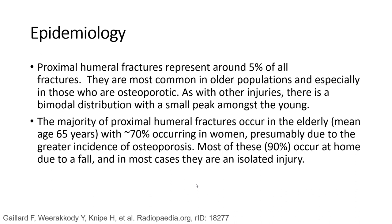As with other injuries, there is a bimodal distribution with a small peak among the young. The majority of proximal humerus fractures occur in the elderly, with a mean age around 65 years, with around 70% occurring in women, presumably due to the greater incidence of osteoporosis. Most of these — 90% — occur at home due to a fall, and in most cases they are an isolated injury.